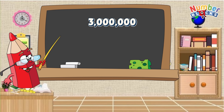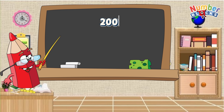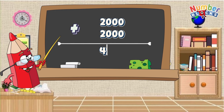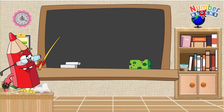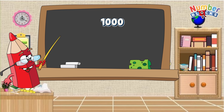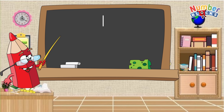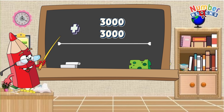Three million plus three million equals six million. Two thousand plus two thousand equals four thousand. One hundred plus one hundred equals two hundred. One thousand plus one thousand equals two thousand.